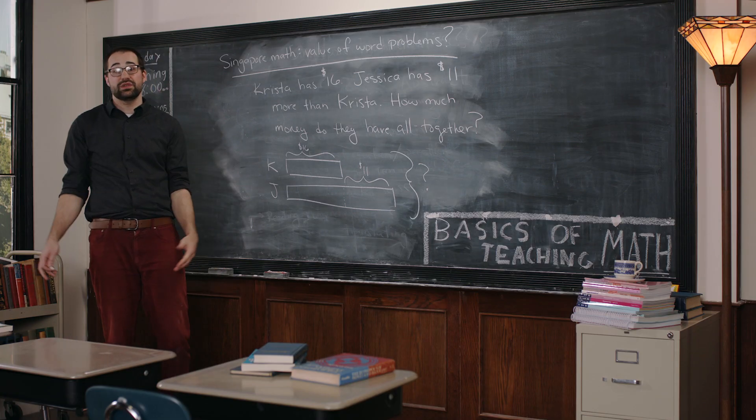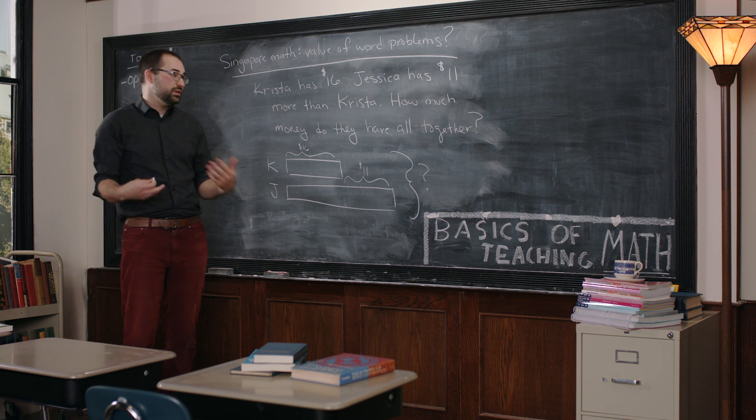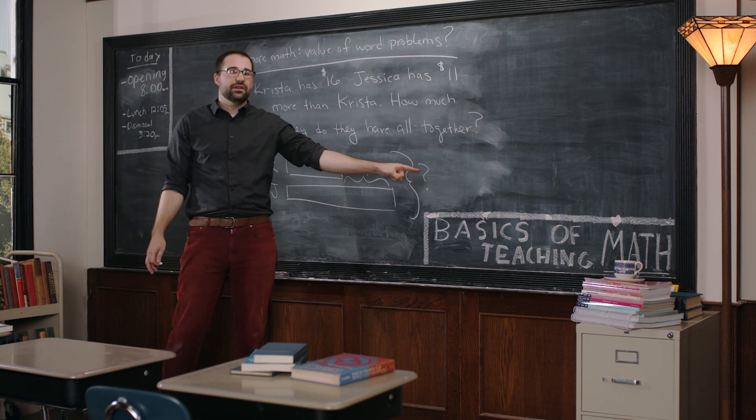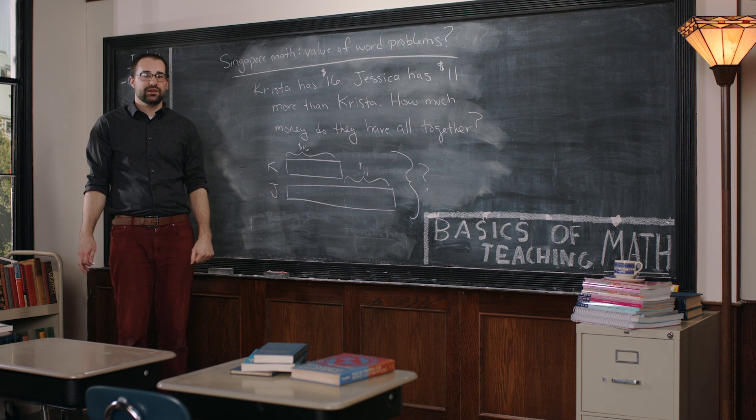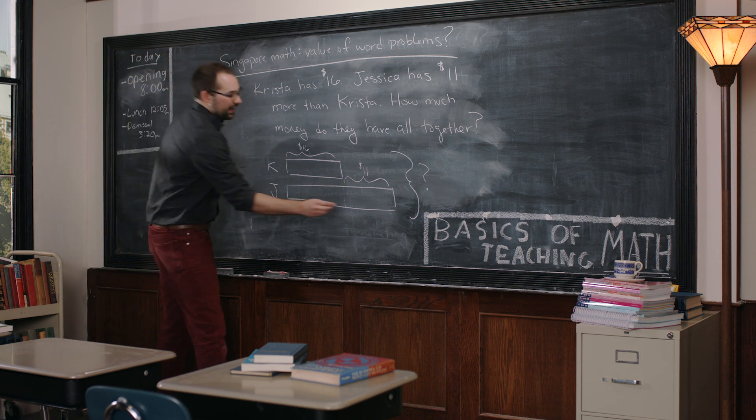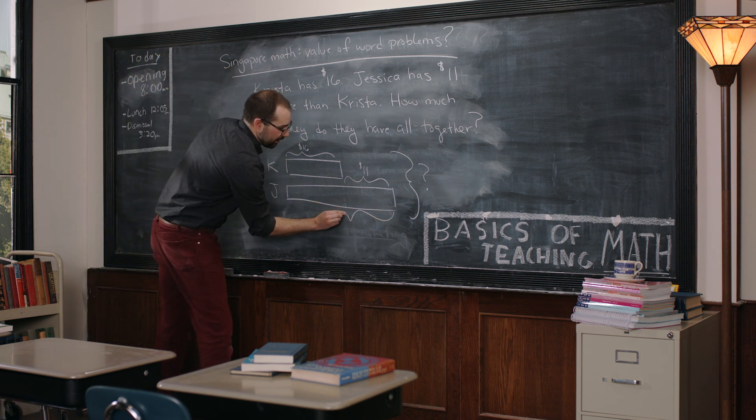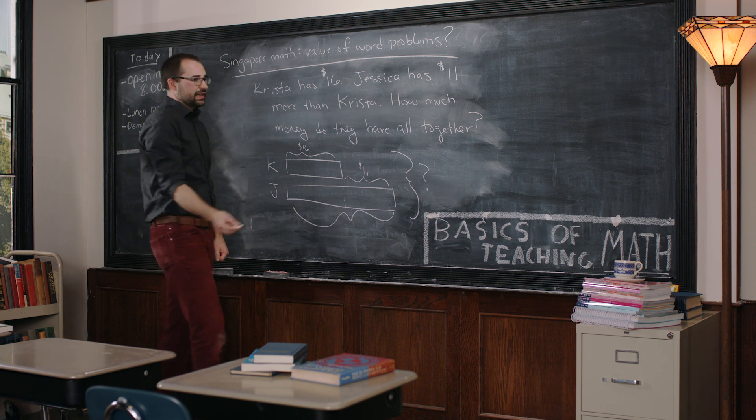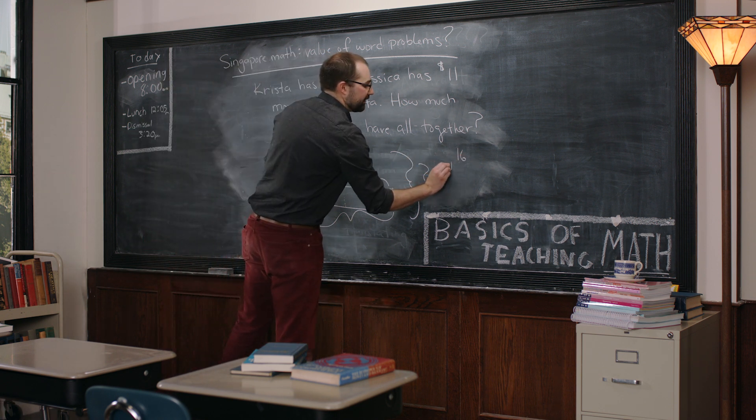What you can see here is this is pretty clearly a two-step process. It's going to be a two-step problem. I can't figure out how much they have all together until I figure out how much Jessica has. I can start by doing that, start by saying what's this? And now you might get a student doing something like 16 plus 11 over here, getting 27.